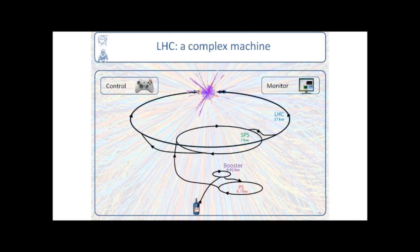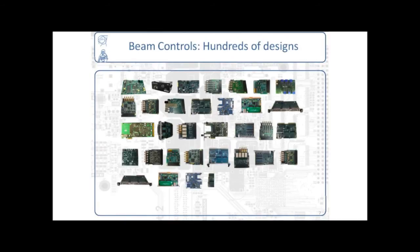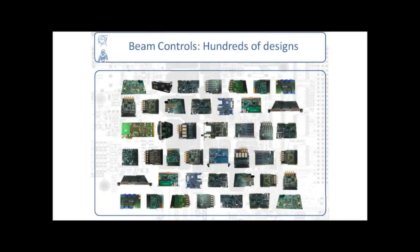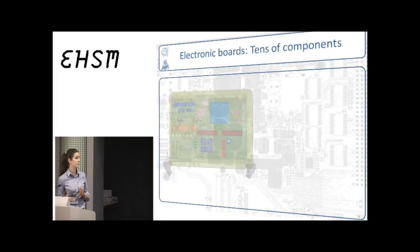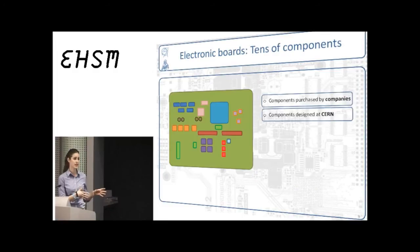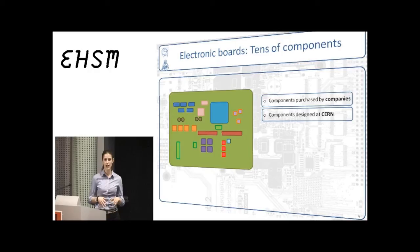I have put here the images of some of these solutions. And as you can see, there is a need of many different electronics. They're usually quite complex, and they have to be robust and reliable for the 10 to 15 years of operation of the LHC. The design is composed of tens of different components. By components here, I mean more generally either IP blocks that would go inside FPGAs or integrated circuits. Some of these components we purchase from companies all over the world, and some others we design in-house at CERN.